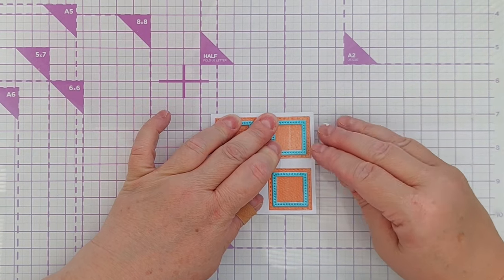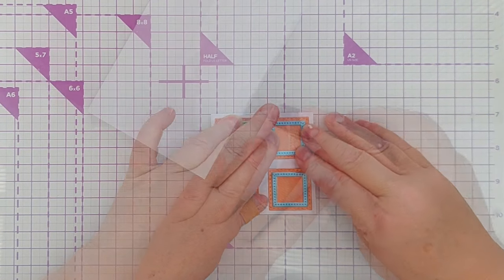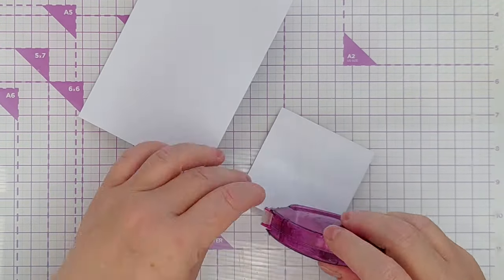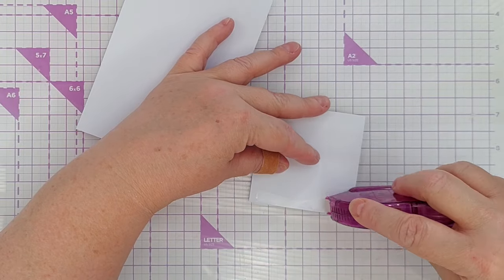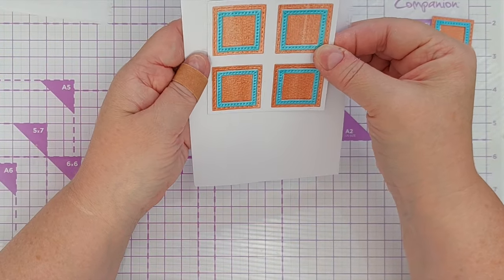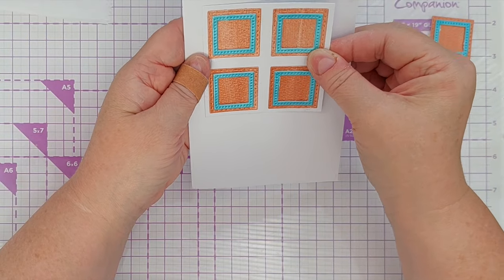I then stuck this whole square onto the front of my four by six card panel using some tape runner but when I stuck it on I just didn't like the square on the rectangle. It didn't work proportionally for me.